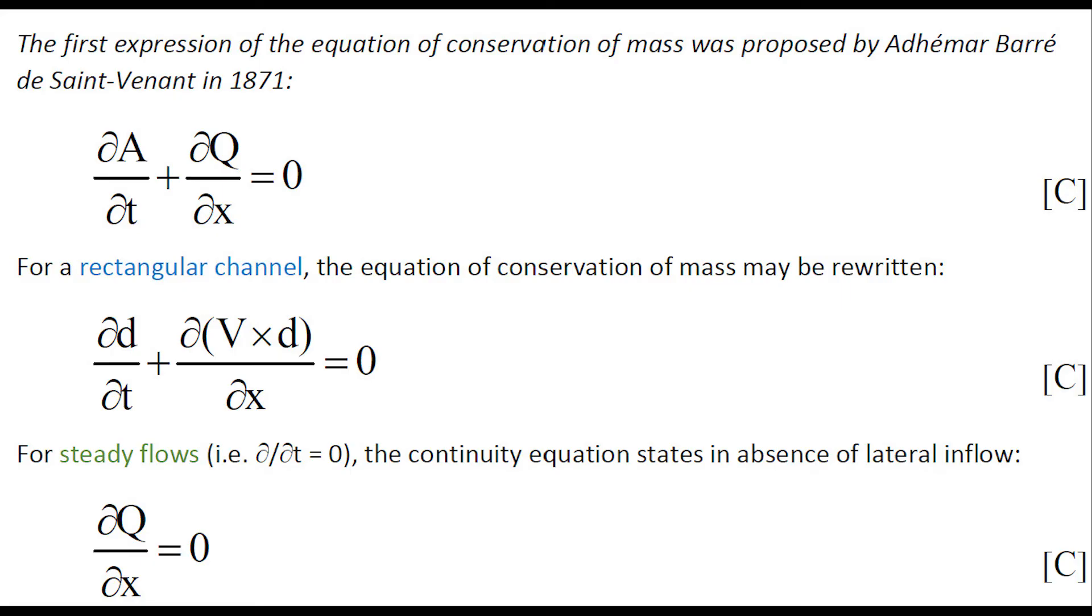The first expression of the equation of conservation of mass for unsteady open-channel flow was proposed by Adhémar Barré de Saint-Venant in terms of the cross-section area and discharge.